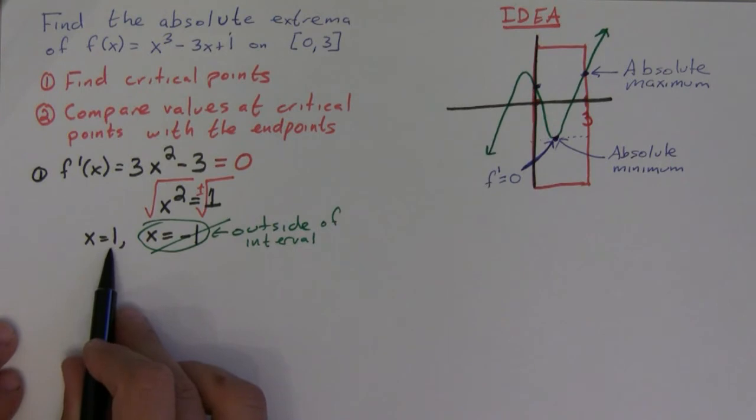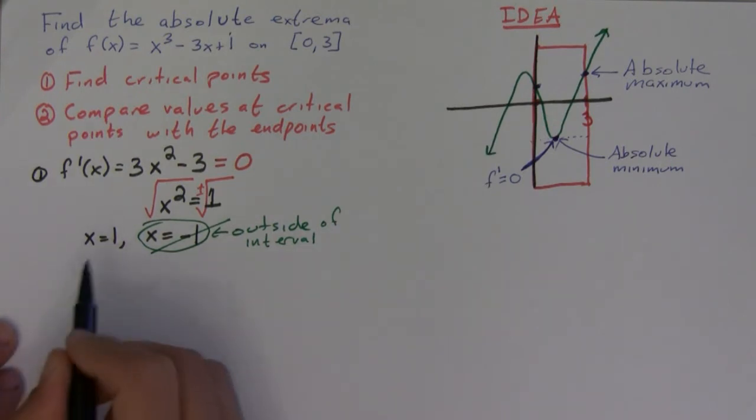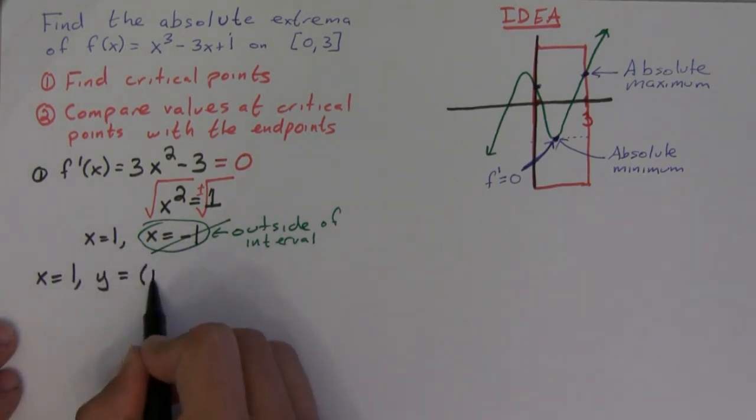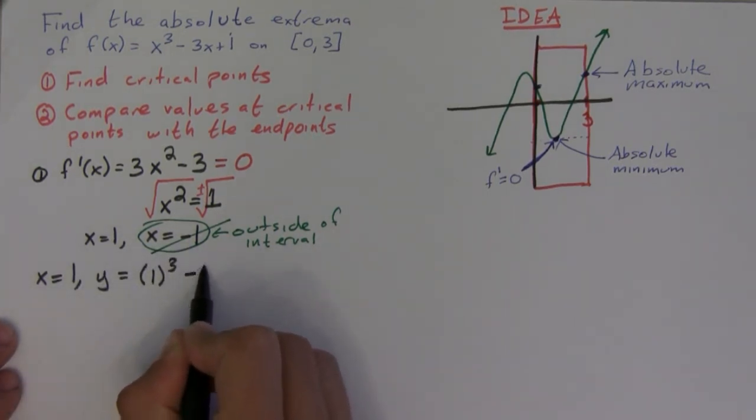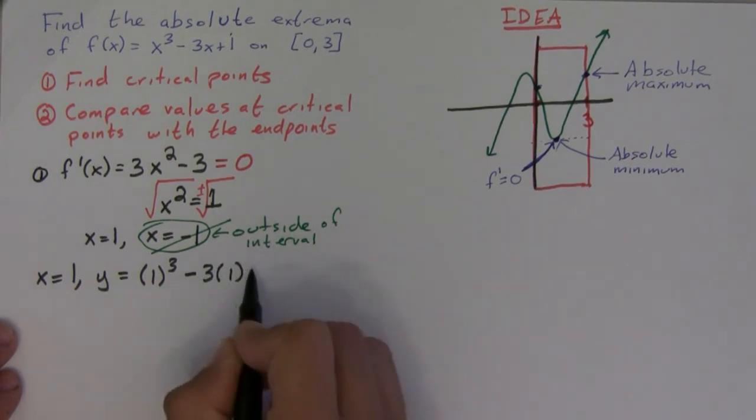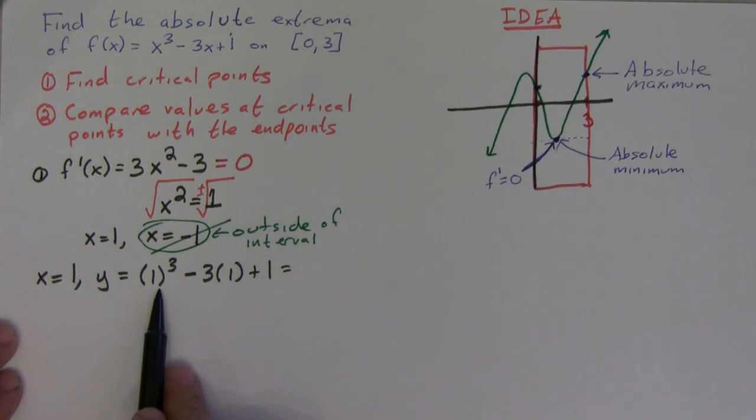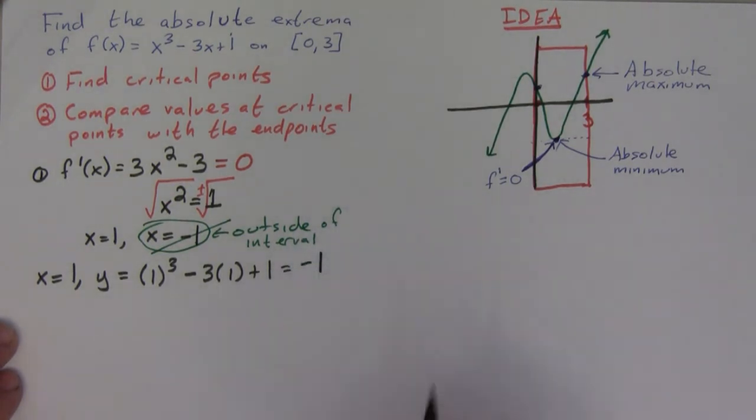Okay, but I do have to check for the value at one. So let's do that. So when x equals one, y equals one cubed minus three times one plus one, and so this is equal to one minus three is negative two plus one is negative one.